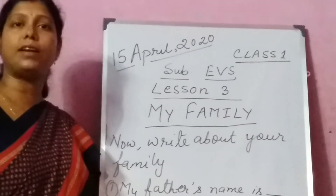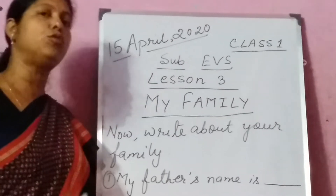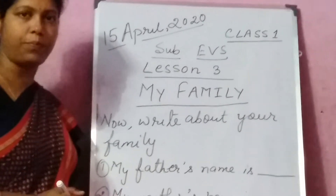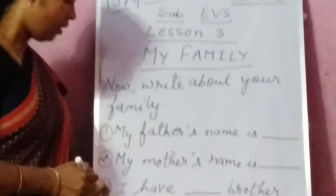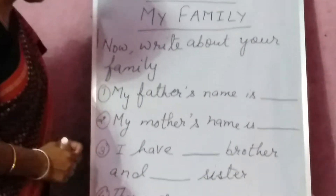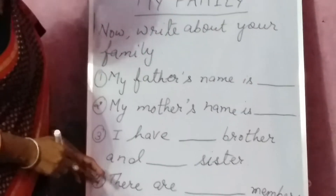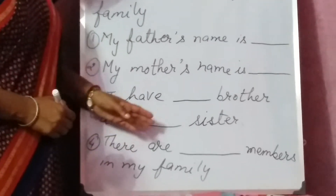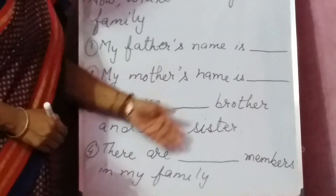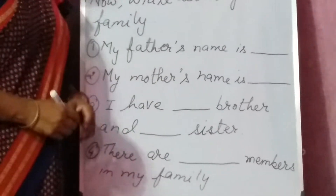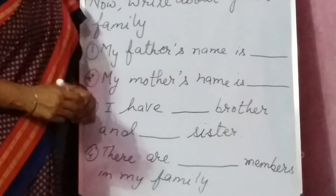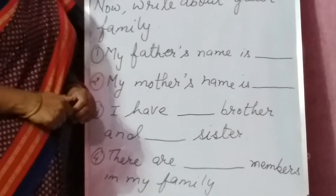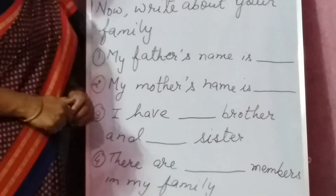If you have two brothers, you can write: I have two brothers. That is not a problem. Next, there are blank members in my family. How many members are in your family? Please write that down.